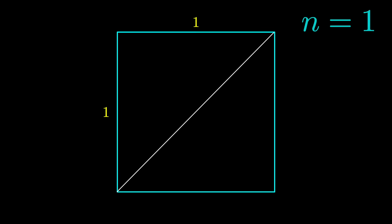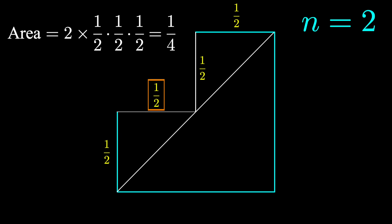So, when n equals 1, we have one step making a triangle with base 1 and height 1. When n equals 2, we'll have two steps with base 1 half and height 1 half.